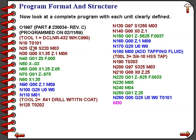Let's look at a complete program to clearly see each of the program units. The program start information is shown in black text. Starting with tool 1, there is descriptive data, then on line 10 we call up tool 1 with offset 1, line 20 turns on the spindle with constant surface speed at 220 SFM, and line 30 positions the tool ready for cutting and turns on the coolant. Lines 40 through 80 are the cutting information; lines 90 through 110 are the tool ending information for tool 1.